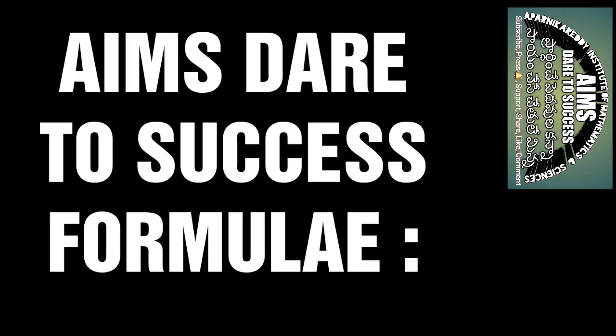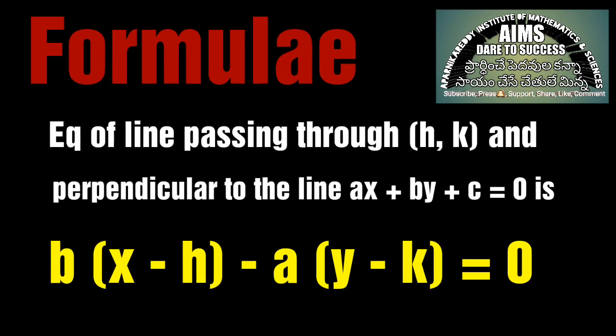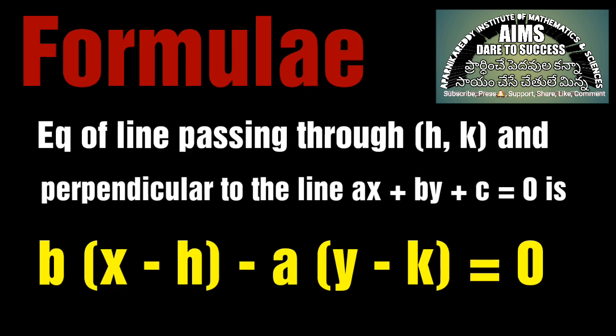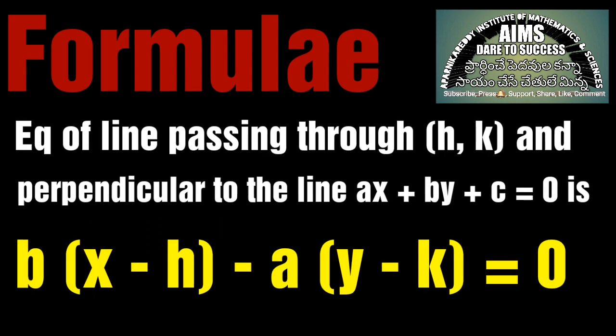The formula is: Equation of line passing through (h, k) and perpendicular to the line ax + by + c = 0 is b(x - h) - a(y - k) = 0.